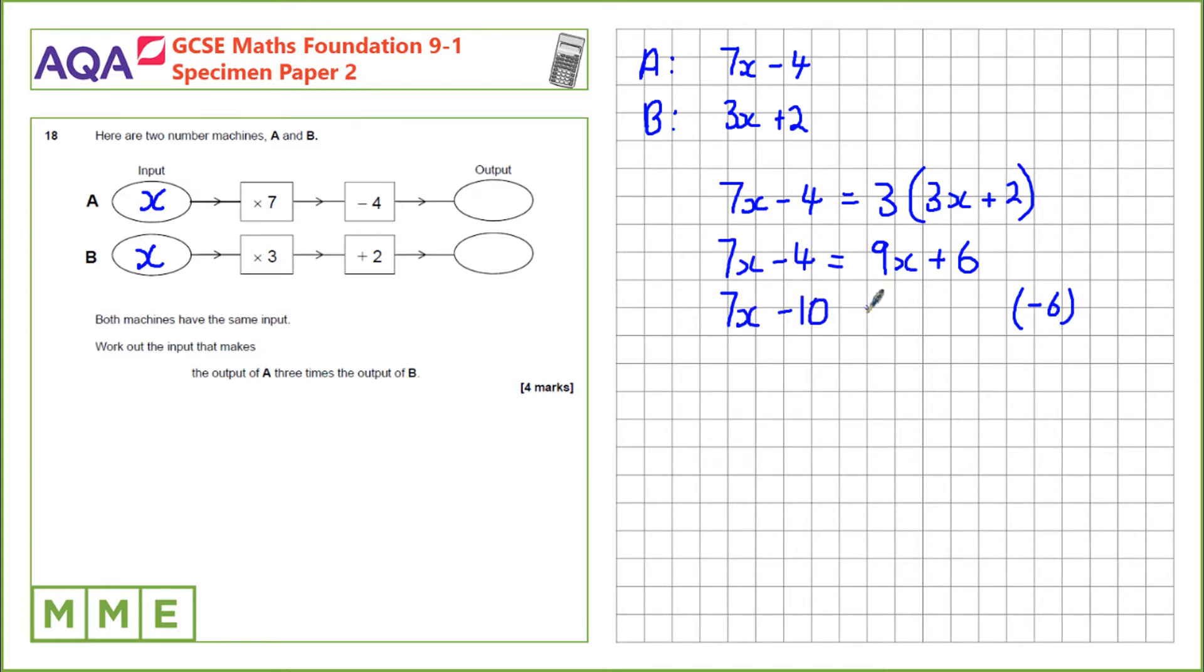Minus 4 minus 6 is minus 10 equals 9x. Now let's take away 7x. On the left-hand side, we're left with minus 10. And 9x, take away 7x is 2x.